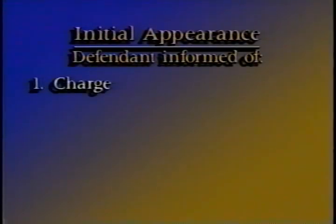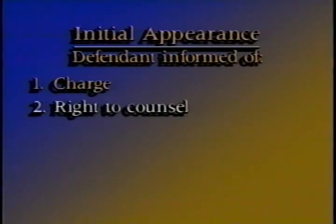The initial appearance is the defendant's first appearance before a judicial officer in the federal court system and is governed by Rule 5 of the Federal Rules of Criminal Procedure. The magistrate judge is charged with several duties under Rule 5: (1) inform the defendant of the charges against her; (2) advise the defendant that she has the right to have counsel of her own choosing and that if she cannot afford an attorney, one will be provided at government expense; and (3) advise the defendant that she has the right not to make a statement, and if she does make a statement, that the statement might be used against her.